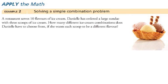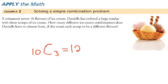We have 10 possibilities to choose from, and the order does not matter, so we use 10C3. How many items is Danielle actually going to choose? That would be 10C3. Jumping over to the calculator and calculating that out, we get 120.